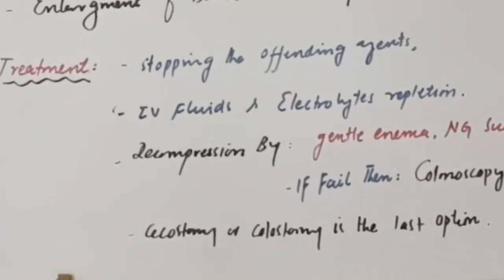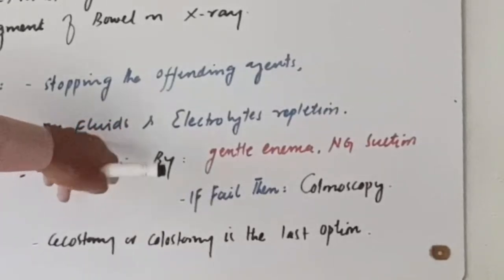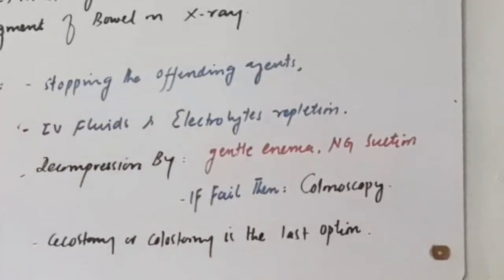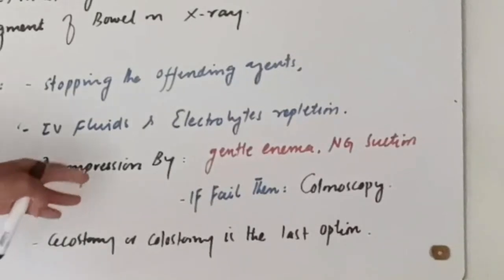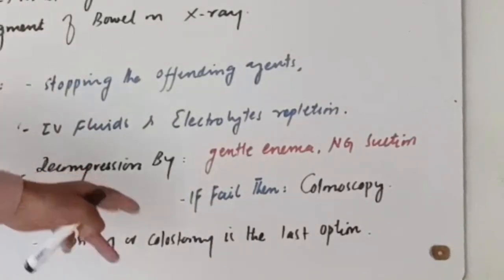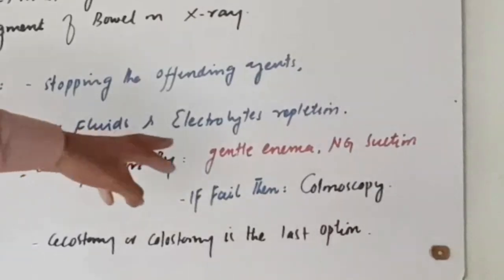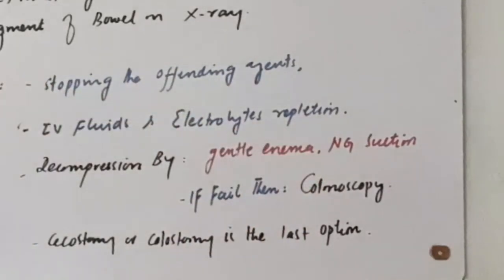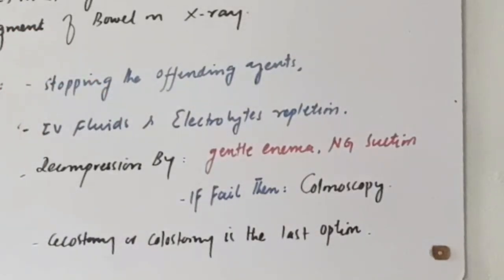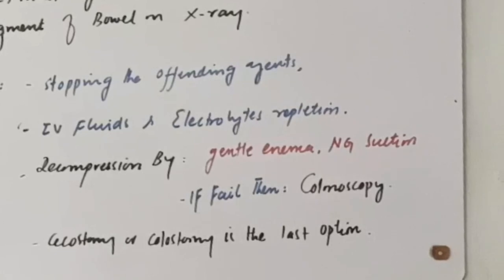Give the patient IV fluids and electrolytes. Another treatment option is decompression, which can be done by enema or nasogastric suction. An enema is a water-containing solution injected into the colon to flush it out. Nasogastric suction involves a tube inserted into the stomach to aspirate its contents.